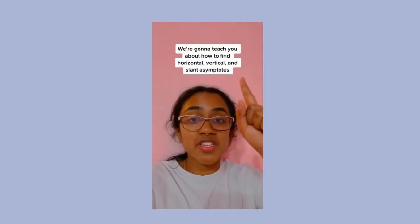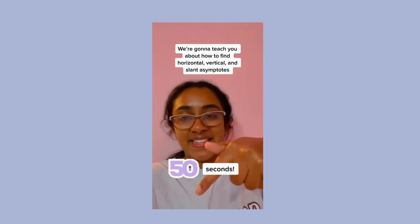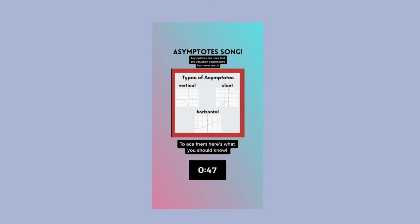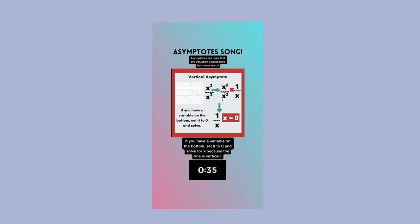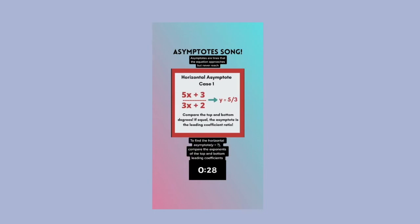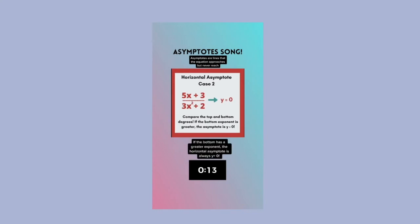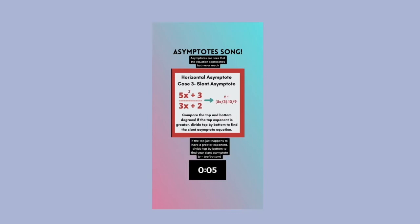We're going to teach you about horizontal, vertical, and slant asymptotes in 50 seconds. Here's what you should know. To find a vertical asymptote: factor in, cancel out. If you have a variable on the bottom, set it to 0 — you have your answer. To find horizontal asymptotes, compare the exponents of the top and bottom leading coefficients. If the exponents are equal, the asymptote is the ratio of the leading coefficients. If the bottom has a greater exponent, the asymptote is always 0. If the top exponent happens to be greater, divide top by bottom to find your slant asymptote.